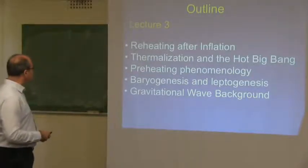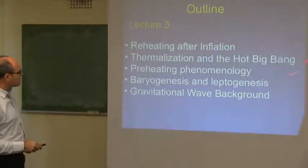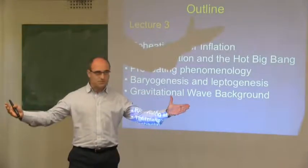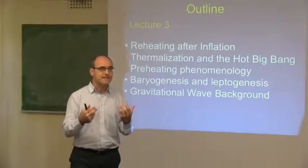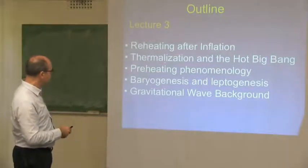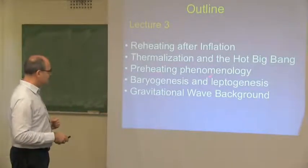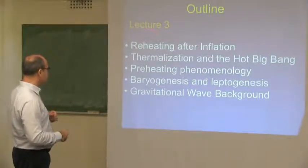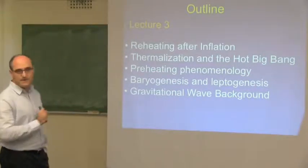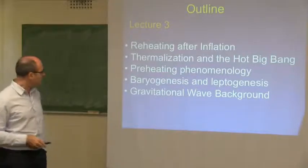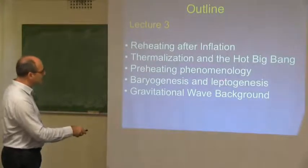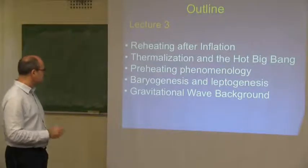Let me briefly describe the outline: preheating, thermalization, and the origin of the hot Big Bang. The Big Bang — the modern Big Bang — is the moment in which the extraordinarily large energy density driving the expansion during inflation gets converted into radiation and matter. That's the primordial egg that Lemaître was talking about. We now know it's much more complicated — not just simply a scattering of particles which eventually reach thermalization. It is possible that at the end of inflation, very rich phenomenology comes from a process called preheating. One of those I will concentrate on is baryogenesis or leptogenesis, which through preheating would allow us to generate the baryon asymmetry of the universe.